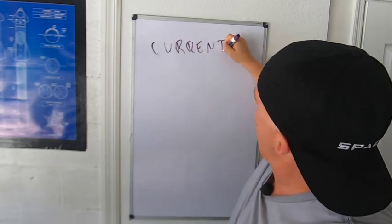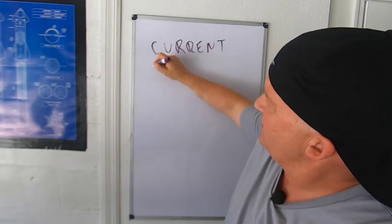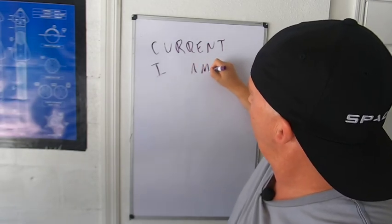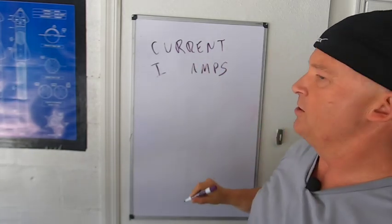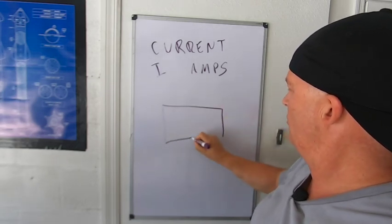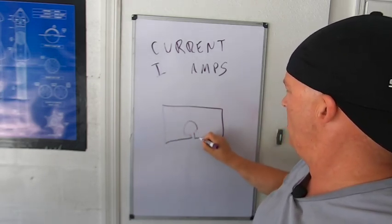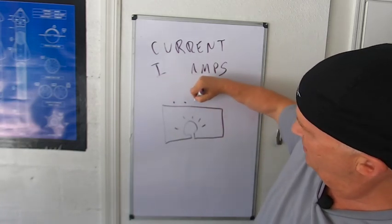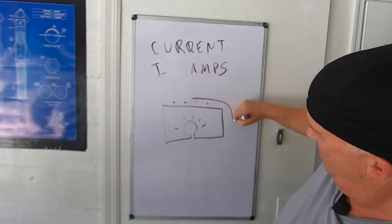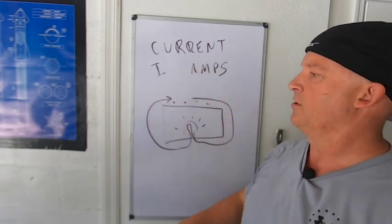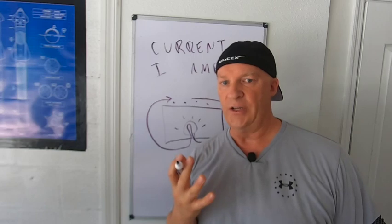Current has the letter designation I, and the units are amps. Current is the flow of electrons through your wire. Let's just say this is a light bulb, and the current is these little electrons going around, through the light bulb, and back to the start. So current is the flow of electricity. Easy.